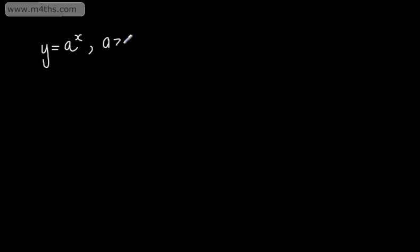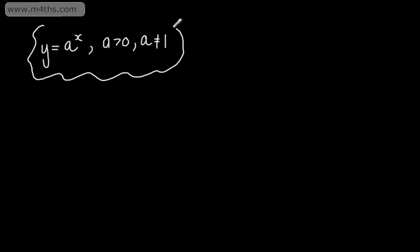In this video, we're going to look at graphing exponential functions — graphs of the form y = a^x. We say that a is greater than 0 and a cannot be equal to 1. If a = 1, we simply get a horizontal line at y = 1. So y = a^x is an exponential graph.